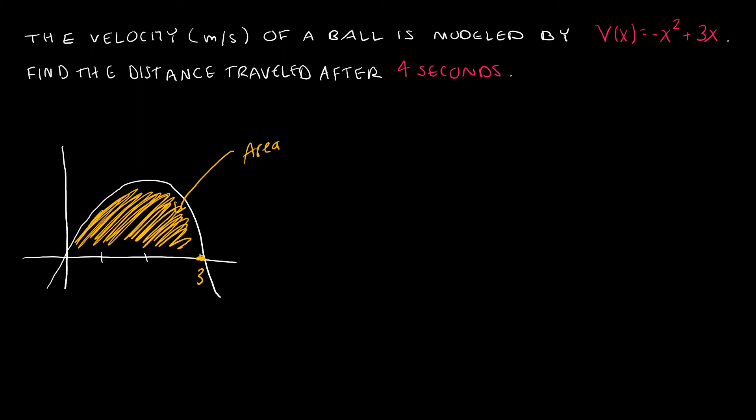That's all we're going to do, and the good news is we already know how to do that. This is going to be the integral from 0 to 4. So even though I already know by graphing it that it ends at three seconds, I'm going to continue to 4. And I'm going to take negative X squared plus 3X, the integral with respect to X.